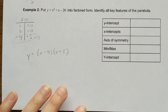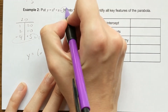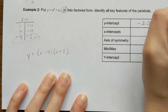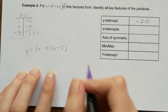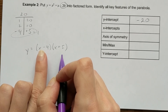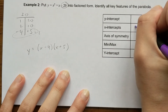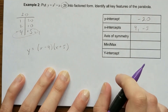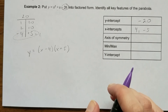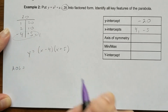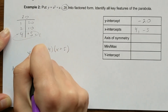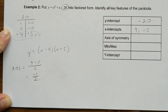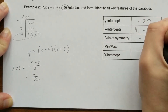Let's pull information from our equations. The last number in standard form gives us the y-intercept, so -20 is our y-intercept. The x-intercepts are the opposite of the numbers in the brackets: instead of -4 it's positive 4, and instead of +5 it's negative 5. My axis of symmetry is halfway between those: (4 + (-5)) ÷ 2 = -1/2. So my axis of symmetry is x = -1/2.